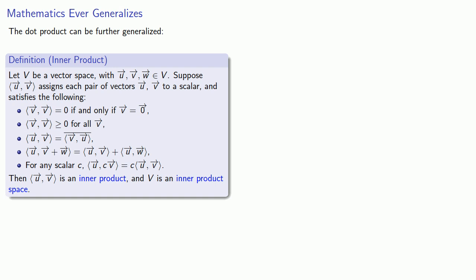A quick observation: there are only so many symbols, and here we're recycling the symbols we use to indicate vectors, but this time what we mean by this set of symbols is the inner product of the vectors u and v. So what does the inner product do?